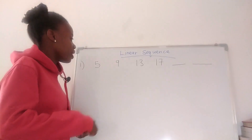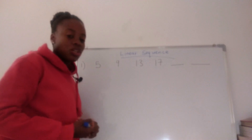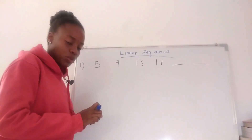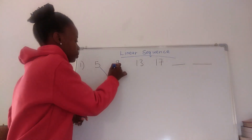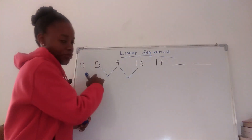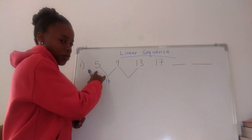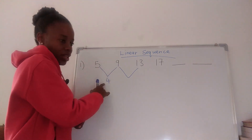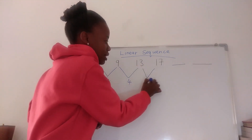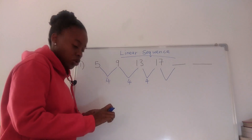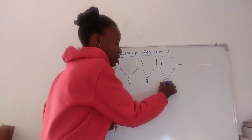Number one, we have 5, 9, 13, 17, dash, dash. We are supposed to find the next two terms. So we're going to find the difference — what they did to get to the next term. From 5 to 9 they added 4, from 9 to 13 they added 4. This means this is a linear sequence or arithmetic sequence because the first difference is the same.